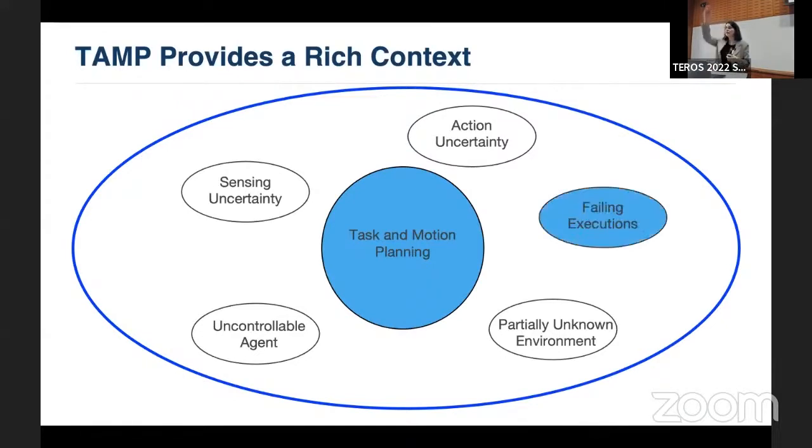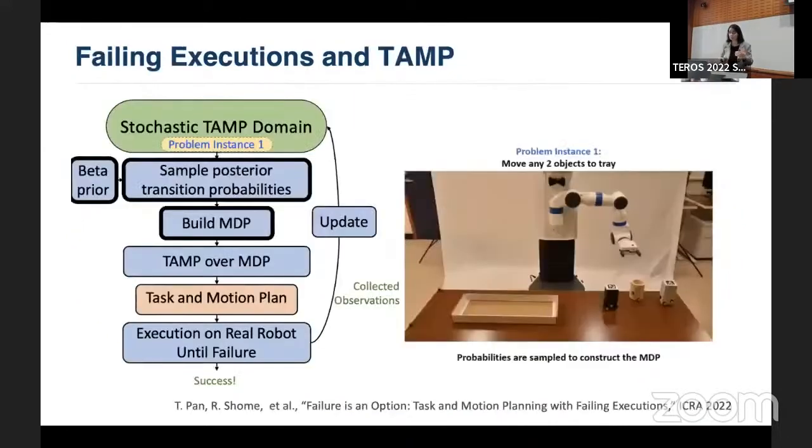And once it worked well, we said, now we can put uncertainty in sensing, in action. Now we can put partially unknown environments, failing executions. Tianyang Pan, who is here, will be presenting a poster where he shows a case where you have a robot manipulating these objects on the table. And the robot learns by the manipulation that it's doing. But if some of these objects are not easy to grasp and it fails all the time, it keeps this information by sampling posterior transition probabilities. And it keeps this information in an MDP and does the task and motion planning with this MDP converging to more robust solutions if it's given the same scenario again and again.